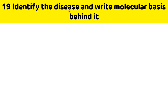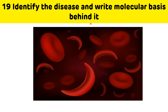Next question: identify the disease and write the molecular basis behind it. This is the picture of RBCs — as you can see, the RBCs are sickle-shaped. It is sickle cell anemia, which occurs due to the replacement of glutamic acid by valine at the sixth position in the beta-globin chain. That is the molecular basis behind it.